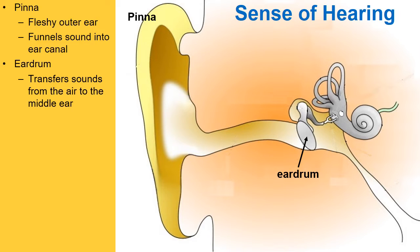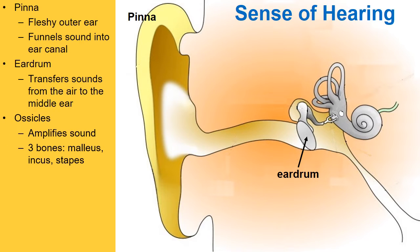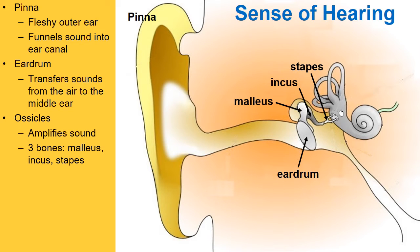Moving further inward, just to the right of the eardrum, are three very small bones collectively known as the ossicles — the malleus, the incus, and the stapes. These are very small bones; the stapes is no bigger than a grain of rice — three of the smallest bones in the body.